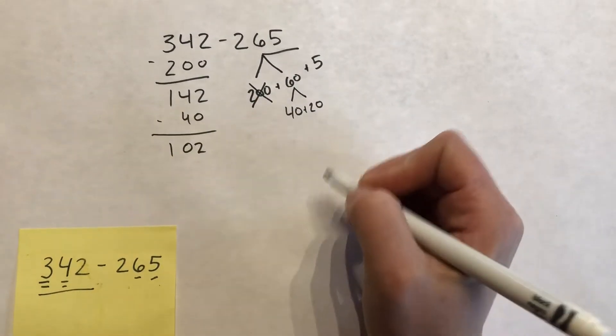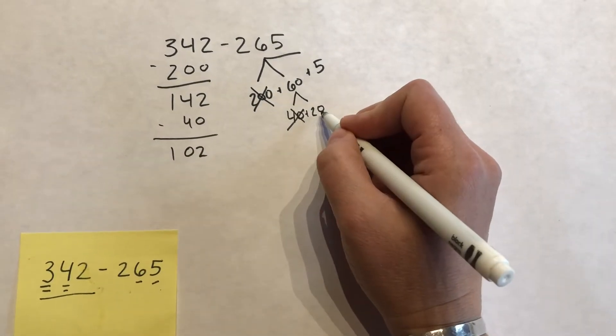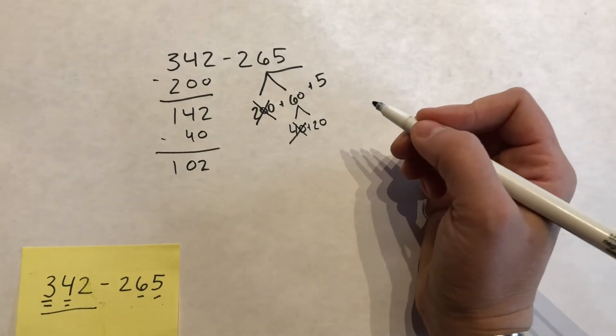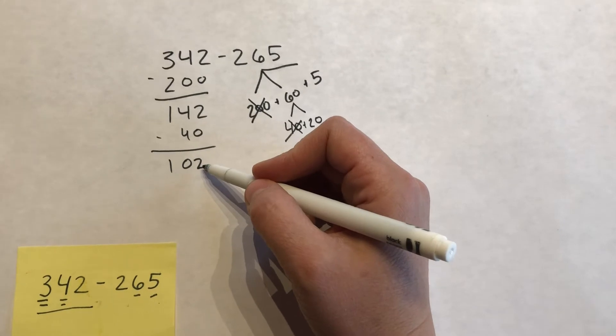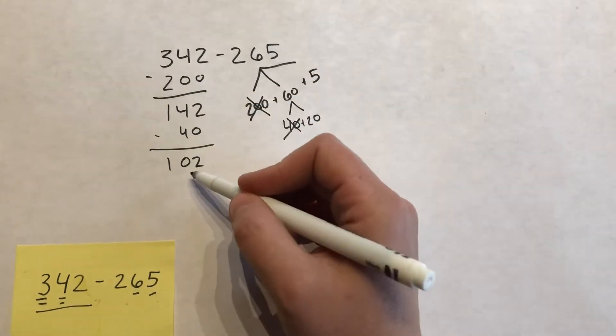I'm at 102, and now I can take away the 20. It's easier for me and students to make this into two steps to get back through that 100.